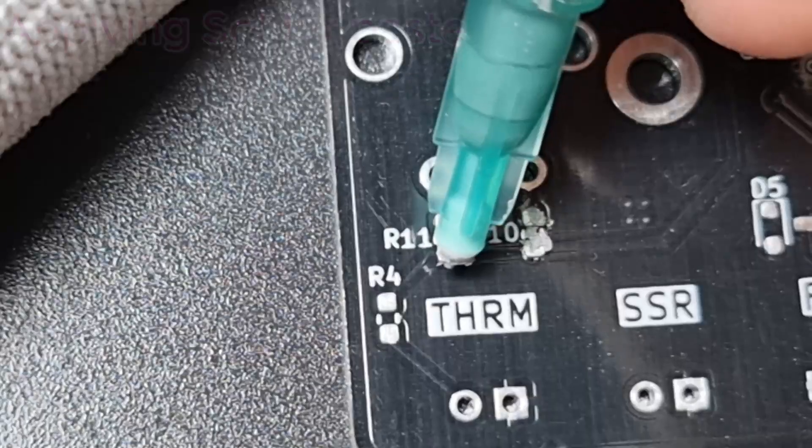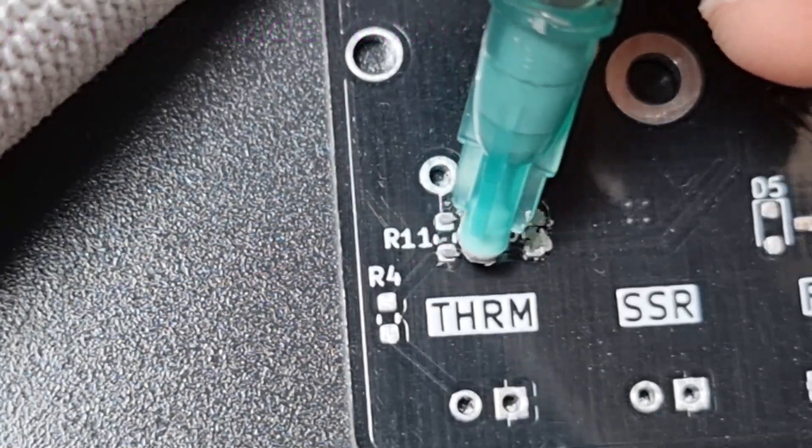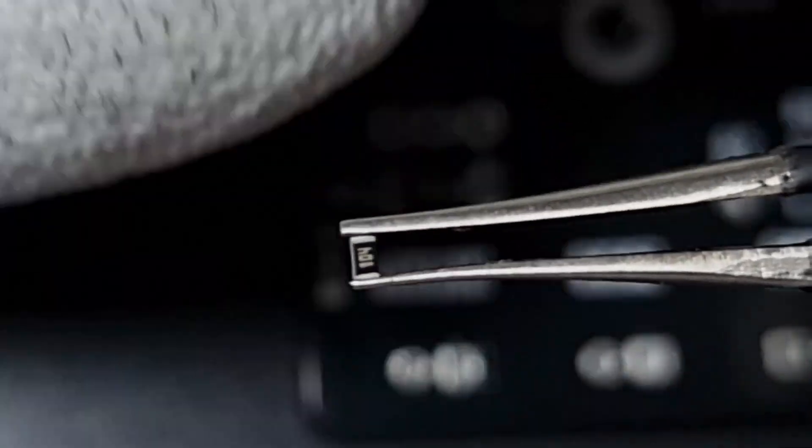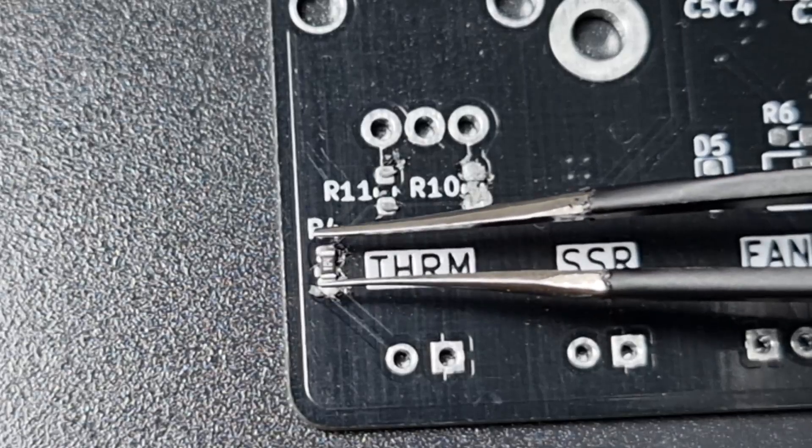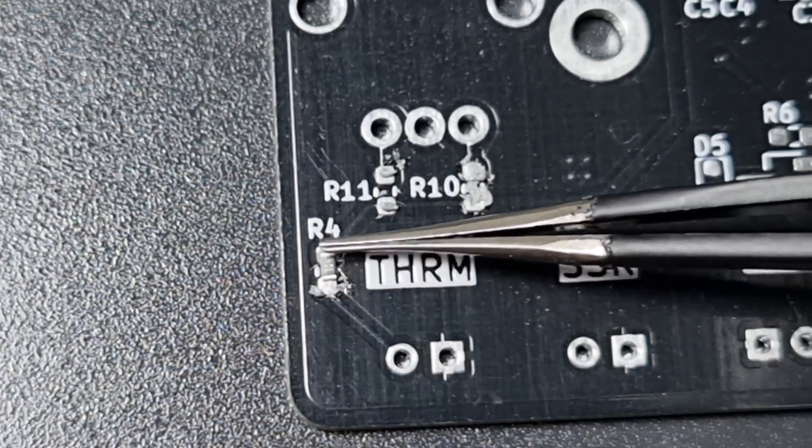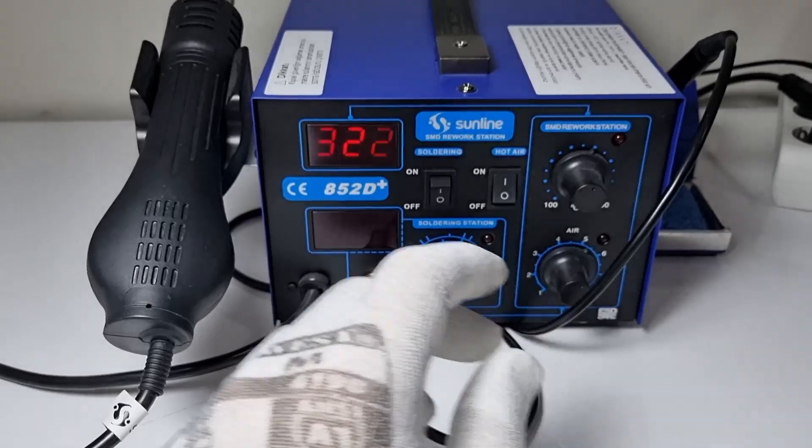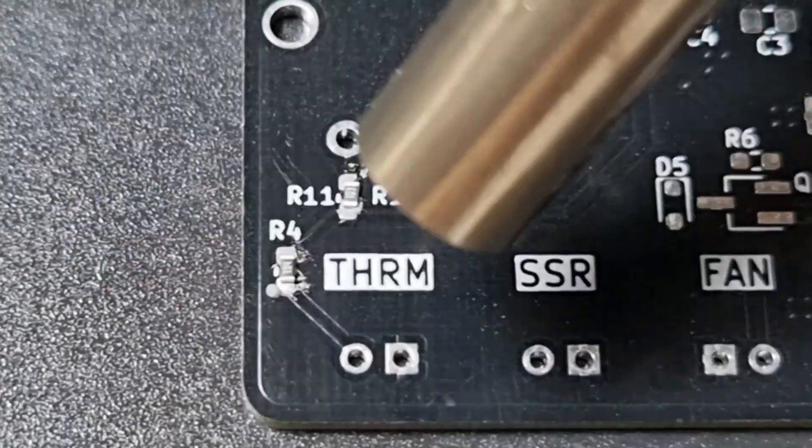As you can see, a pair of tweezers is all you need to place these components. I typically use 0603 resistors in my circuits, but if you are short on board space you can use smaller ones. Just be careful, soldering smaller resistors can be quite challenging.